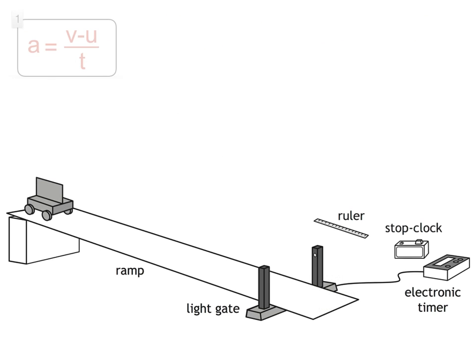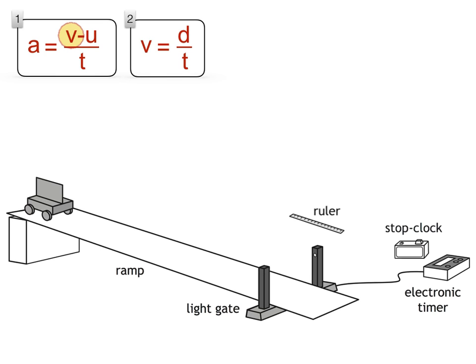This is the equation we use to calculate the acceleration of the trolley. V is the final velocity of the trolley. It's calculated using a second equation, V equals D divided by T, where D is the length of the card measured with the ruler, and T is the time for the card to pass through the light gate.